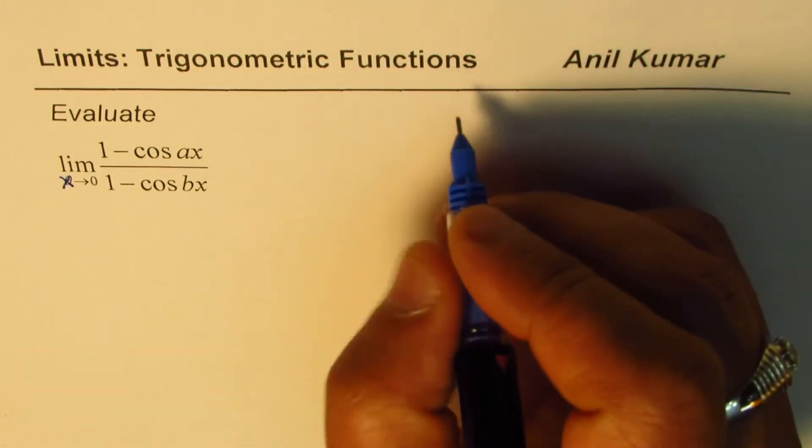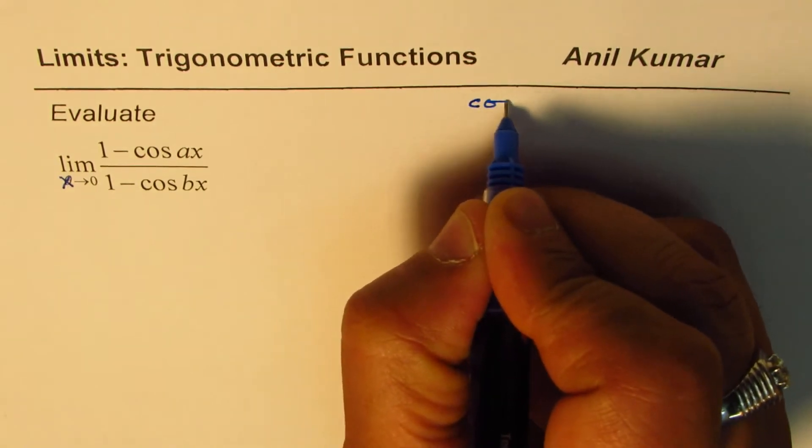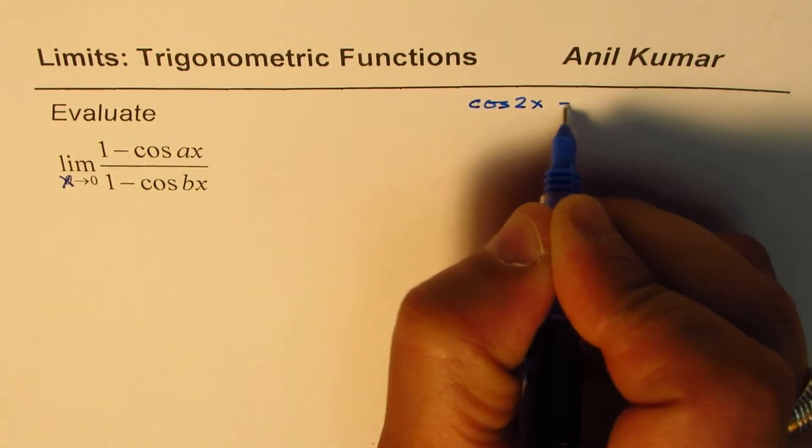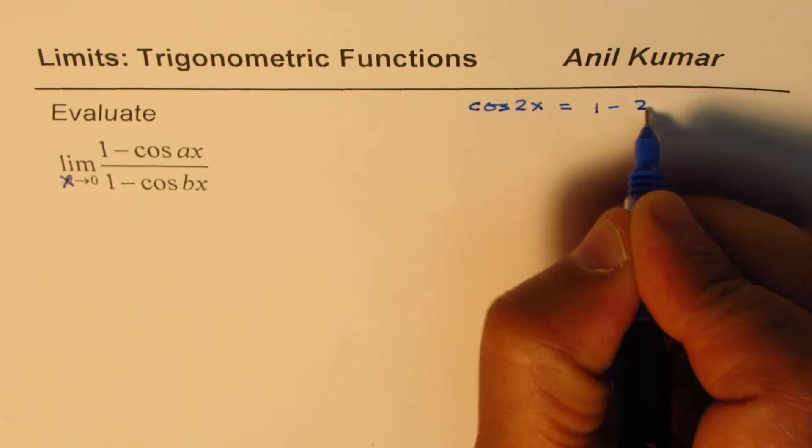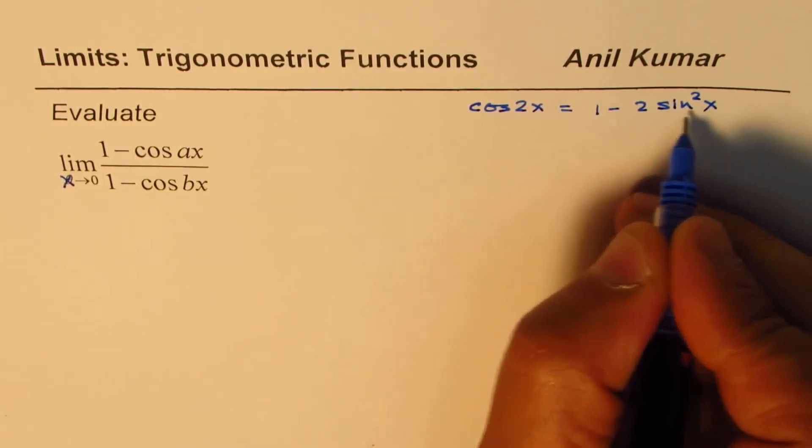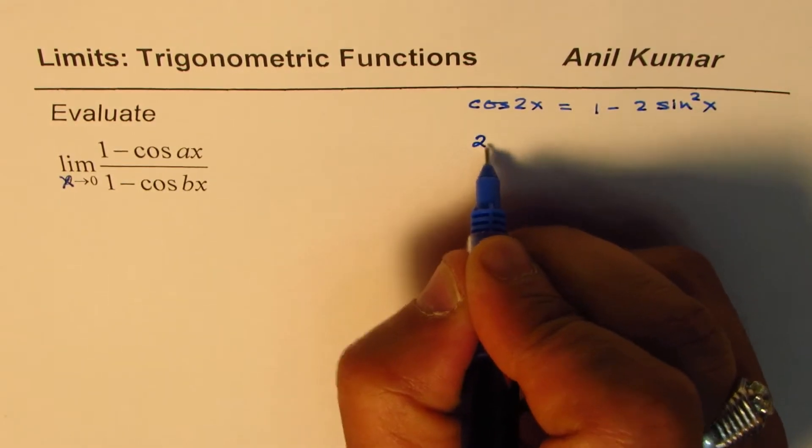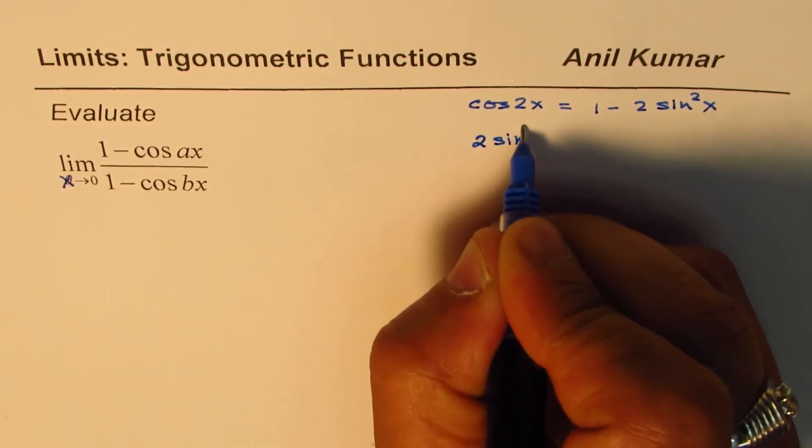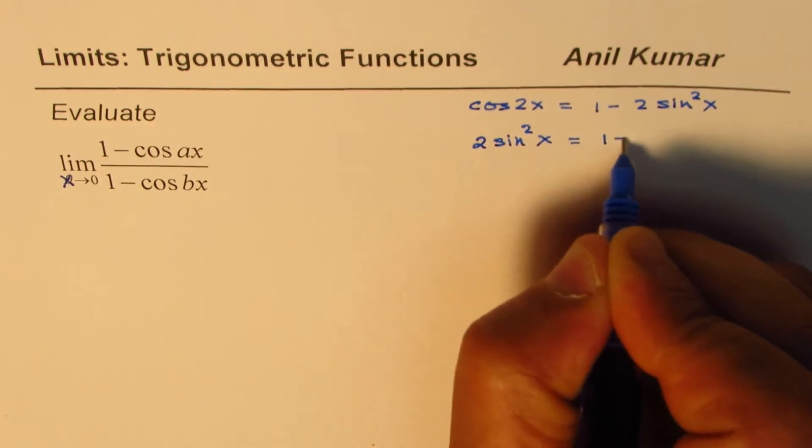Now the trigonometric identity which we are going to use to solve this is cos 2x. Cos 2x could be written as 1 - 2sin²x, so we could rearrange this bringing 2sin²x to the left side so we get 2sin²x = 1 - cos 2x.